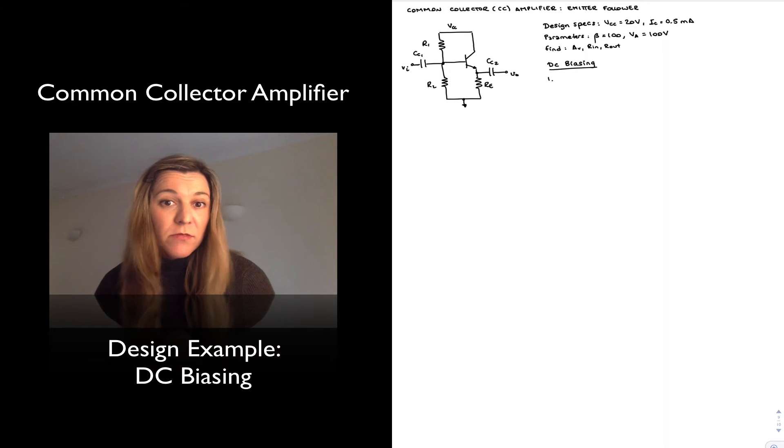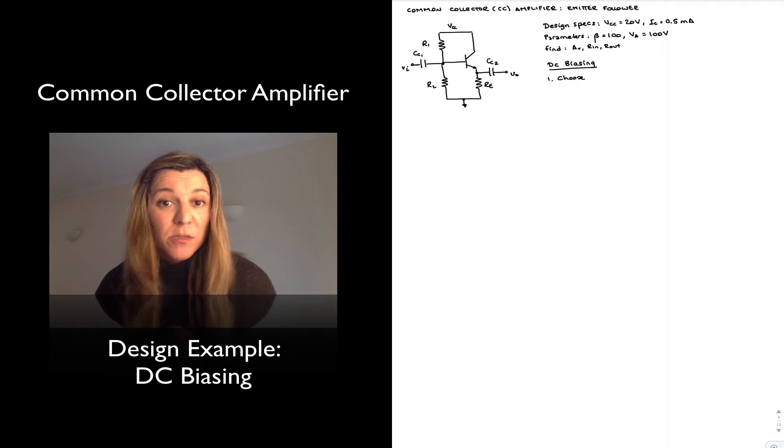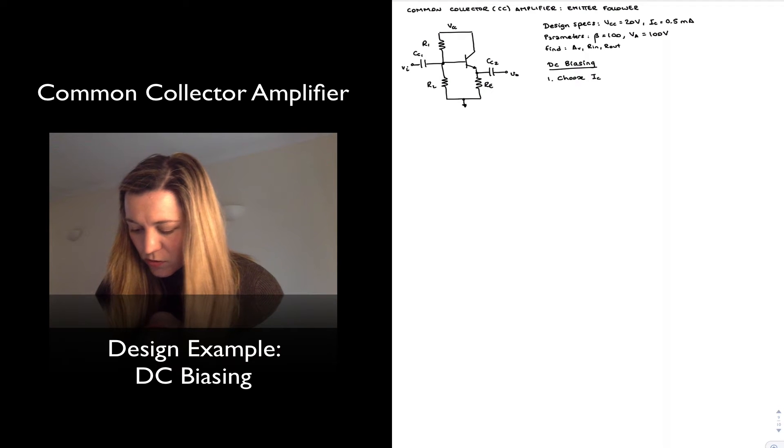Step number one is selecting the collector current, which in this case I'm already given in my design specs. But I won't always be given the collector current, so I'll have to select one. I'm going to choose half a milliamp.